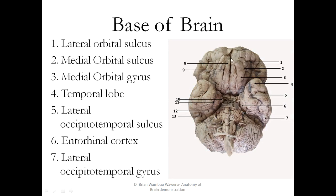When you go to the base of the brain, you see the lateral orbital sulcus, and then the medial orbital sulcus, which becomes the medial orbital gyrus. This area represents the temporal lobe — the temporal pole. Then you have the lateral occipitotemporal sulcus, labeled number 5.